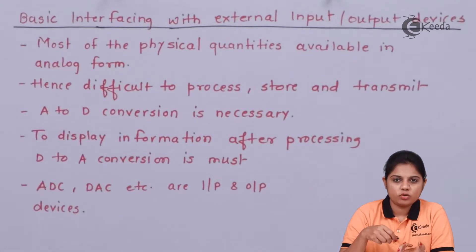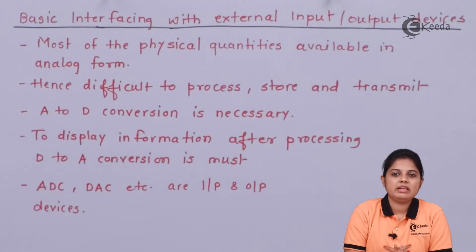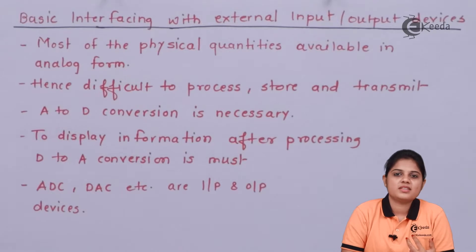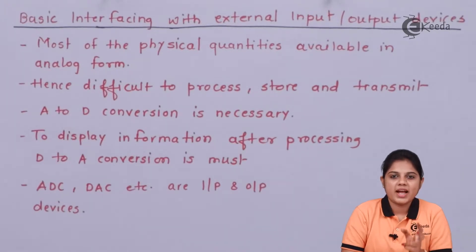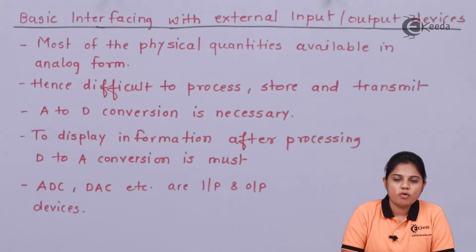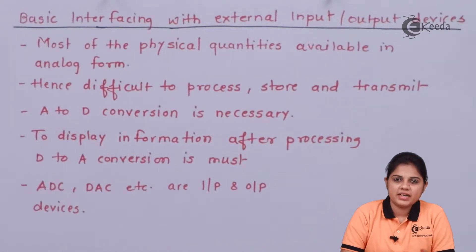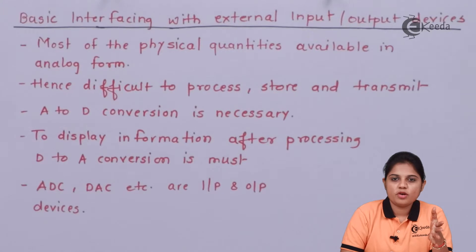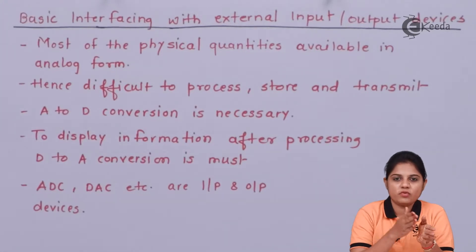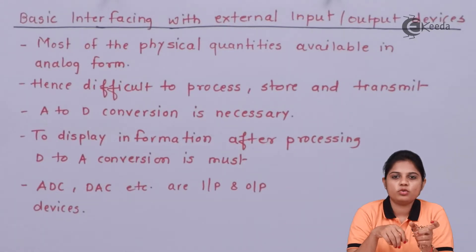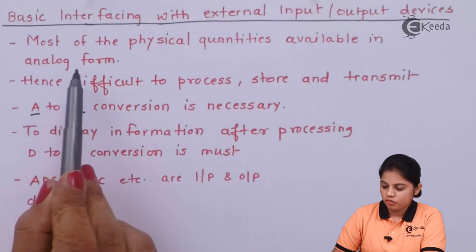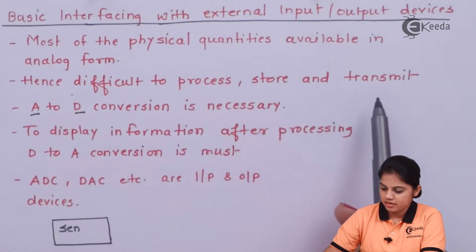Temperature, humidity, and such physical quantities are always available in analog form. If you send analog data to a microcontroller, computer system, or microprocessor, these devices work on data available as ones and zeros — they cannot process analog data. So the analog data must first be converted from analog form to digital form before it can be processed by the microcontroller.